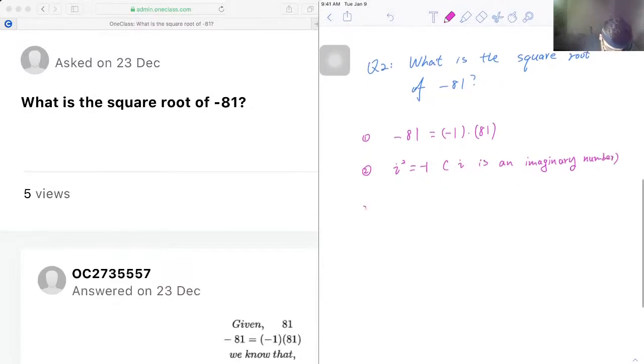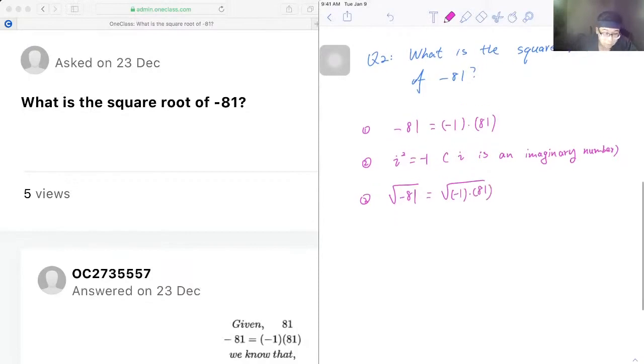So therefore we can write square root of negative 81 is equal to square root of negative one times 81, and we can also write that as square root of i squared times nine times nine, where we can take i and nine out from the square root. So we have...